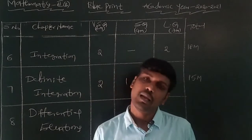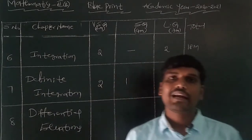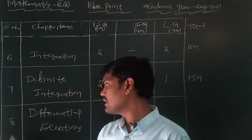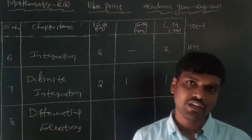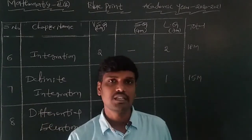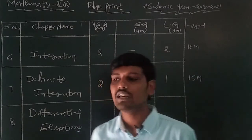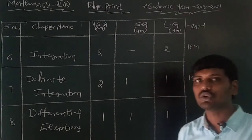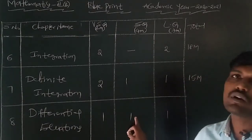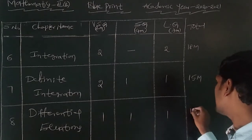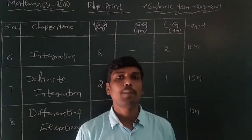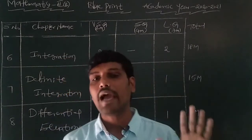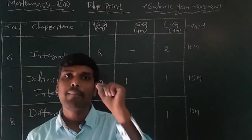The eighth and last chapter is Differential Equations. In this chapter: one 2-mark question, one 4-mark question, and one 7-mark question are coming. Total: 2+4+7 = 13 marks coming to the IP examination from the Differential Equations chapter.